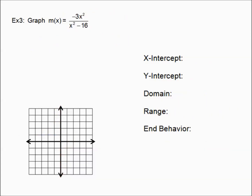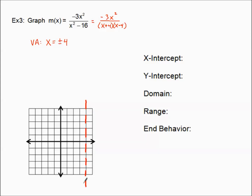Let's turn over and look at example three — our final example. Finding vertical asymptotes: the denominator is not factored this time, so we need to factor it. It's a difference of two perfect squares, so it factors into (x plus 4)(x minus 4). That gives us two vertical asymptotes: x equals negative four and x equals positive four — I'll use a plus-or-minus symbol. I'll dash both in.